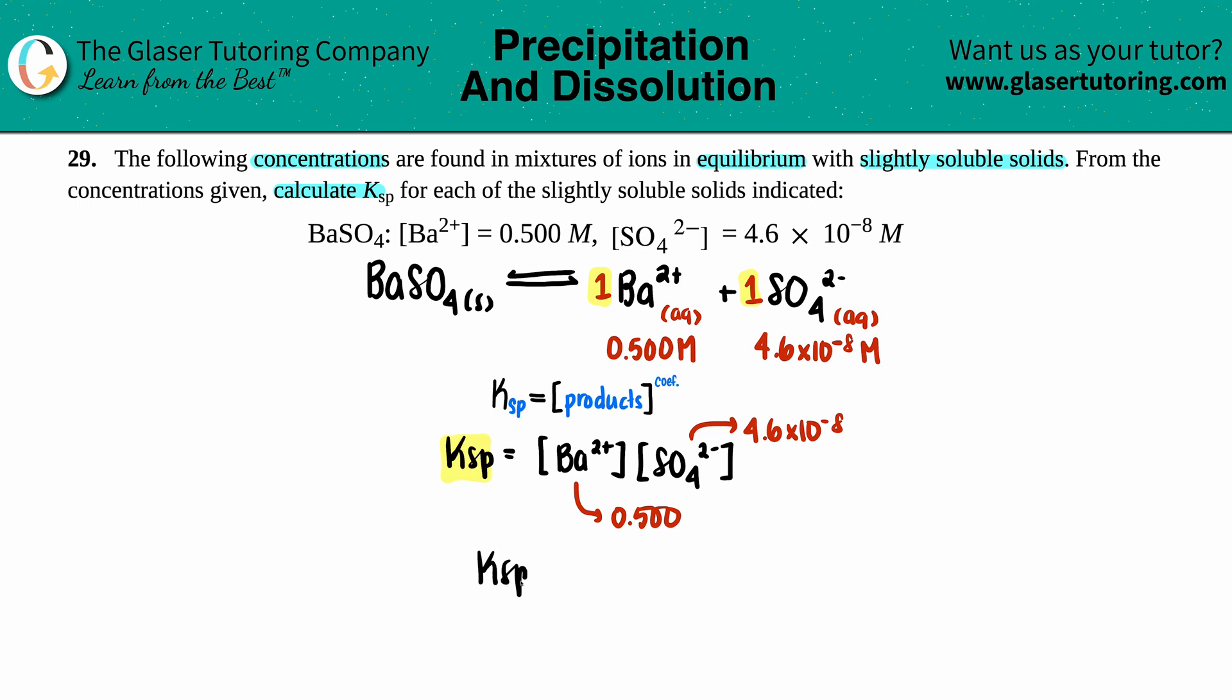Ksp equals the concentration of 0.500 times 4.6 times 10 to the negative 8. Plug this in and then we'll get our answer.